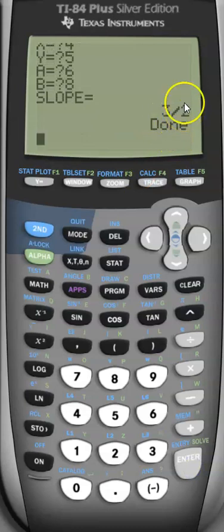I get three halves, which is how you want your fraction or your slope to be. Hopefully that helps and you give me a thumbs up.